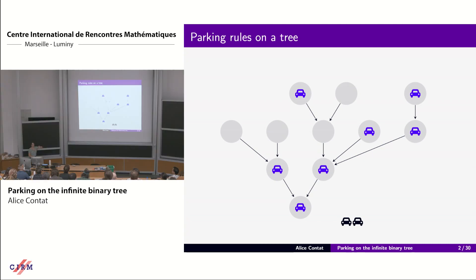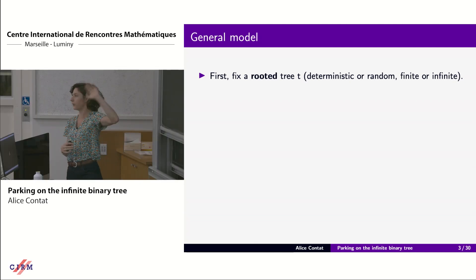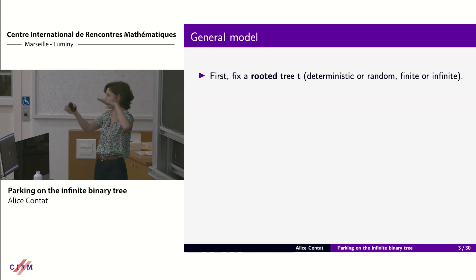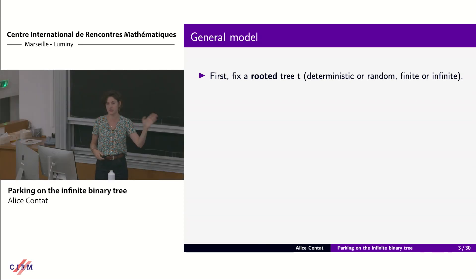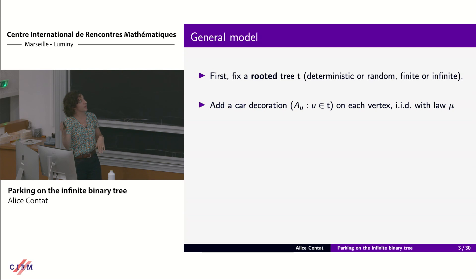So those were the rules for a fixed tree with a fixed car decoration. In the rest of the talk, the model will always be as follows: first we fix a rooted tree — we need a root to have a direction in which cars park, it can be deterministic or random, finite or infinite — and then conditionally on this tree we add a car decoration where the law of car arrivals is i.i.d. with law mu.